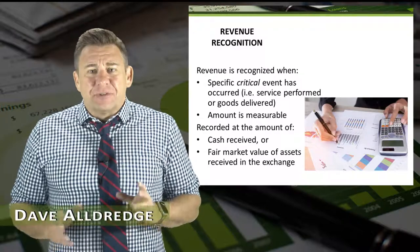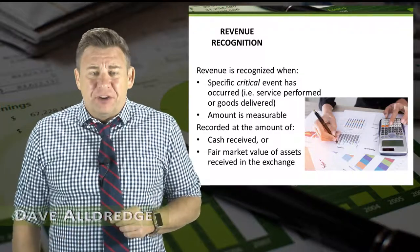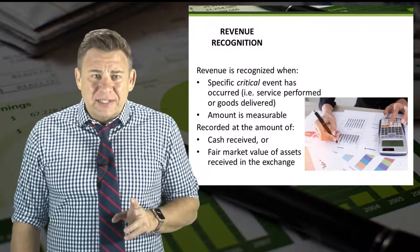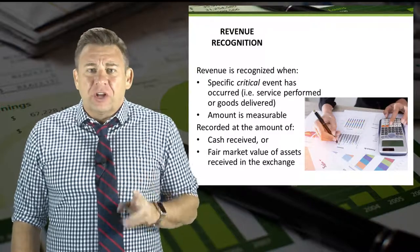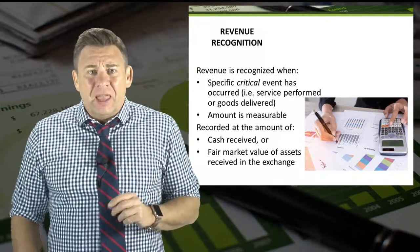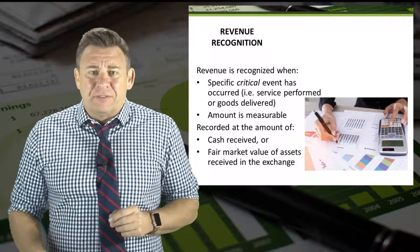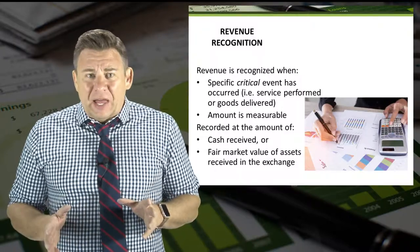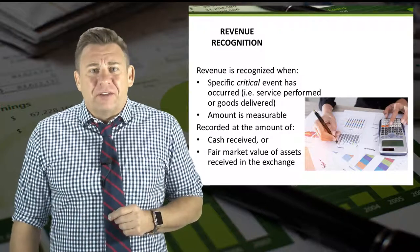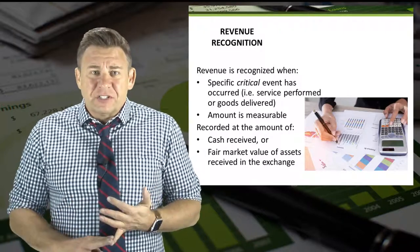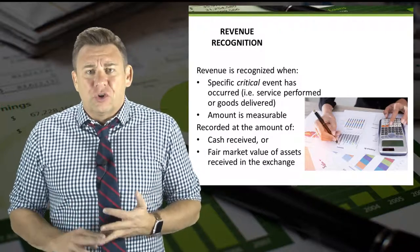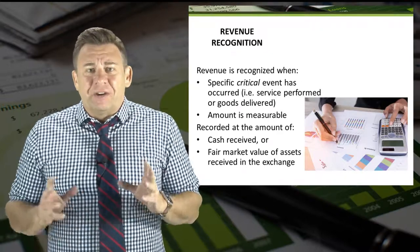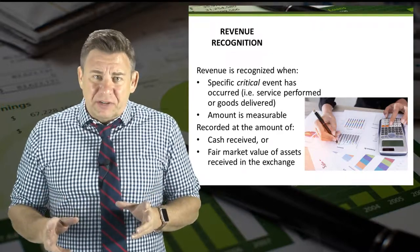Recall, the FASB has revised the definition of revenue recognition to say that revenue is recognized when a specific critical event has occurred and the amount of revenue is measurable. For an accounting principles class, the specific critical event that occurs is either services performed or goods are delivered. The amount of the journal entry is the fair value of the assets received.